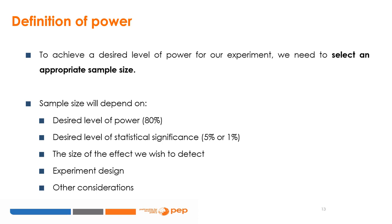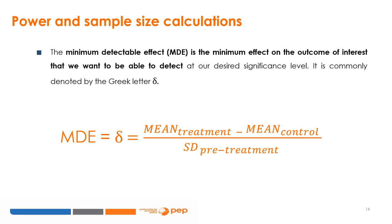Sample size will depend on the desired level of power (80%), desired level of statistical significance (5% or 1%), the size of the effect we wish to detect, the experiment design, and other considerations. When we think about the size of the effect we can expect to find in a program evaluation, we think about the minimum detectable effect. The minimum detectable effect, or MDE, is the minimum effect on the outcome of interest that we want to be able to detect at our desired significance level. It is commonly denoted by the Greek letter delta.